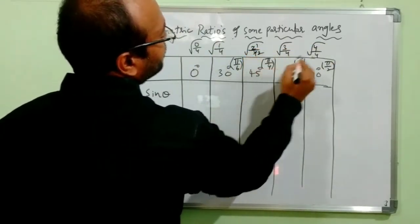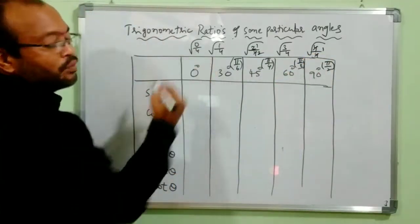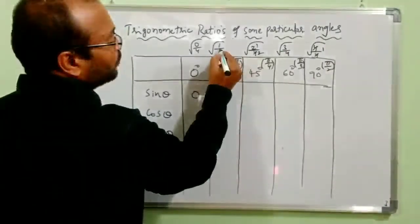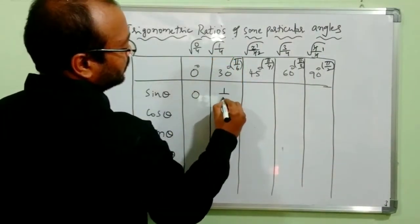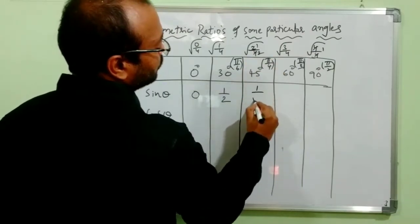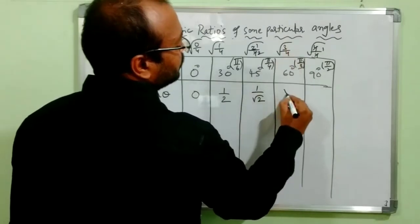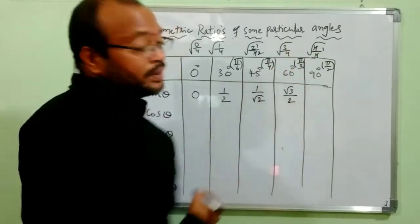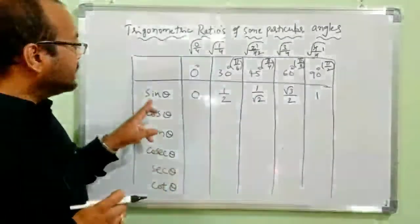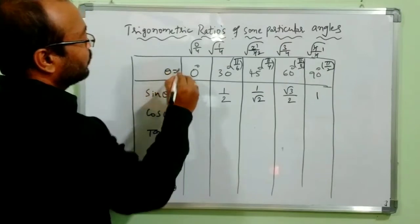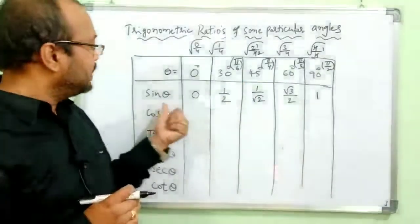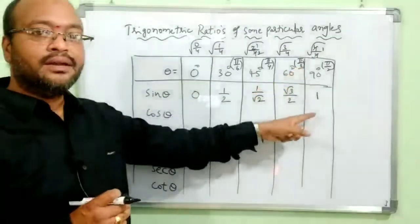Now look here. √(0/4) = 0. √(1/4) = 1/2. √(2/4) = 1/√2. √(3/4) = √3/2. And √(4/4) = 1. So the sin values are: sin 0° = 0, sin 30° = 1/2, sin 45° = 1/√2, sin 60° = √3/2, and sin 90° = 1. Like this we can easily recognize the values.